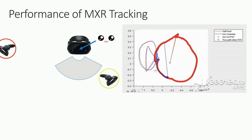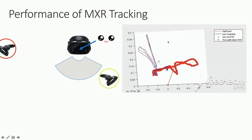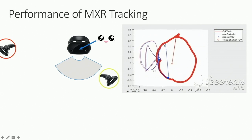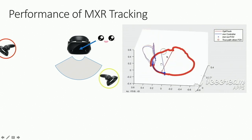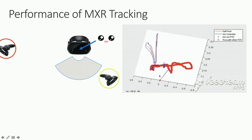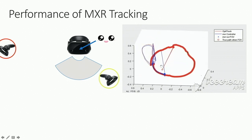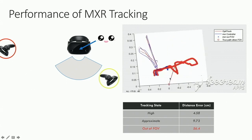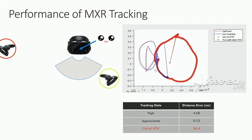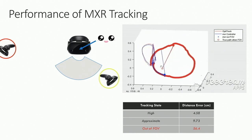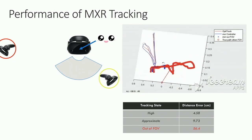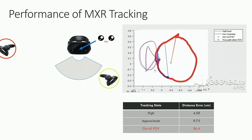The performance of mixed reality tracking shows that when the controller moves out of field of view, the system cannot track it and the predicted position just gets stuck. When it moves back, the system finds it again, but there is a big jump without continuous tracking. Tracking accuracy differs by state: in high tracking, the error is within 4 centimeters; in approximate, around 10 centimeters; but out of field of view, the error can be as high as 50 centimeters, providing no useful information.